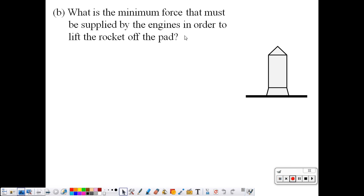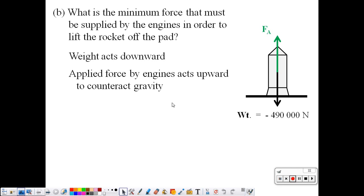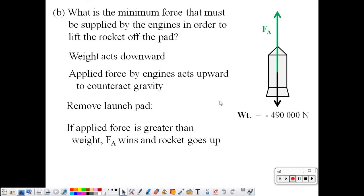Part B: what is the minimum force that must be supplied by the engines in order to lift the rocket off the pad? Weight acts downward, engines apply a force upwards. If the applied force is less than the weight, gravity wins and the rocket falls. If the applied force is greater than the weight, then the applied force wins and it lifts the rocket off the pad.